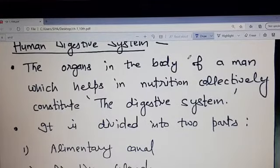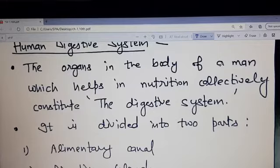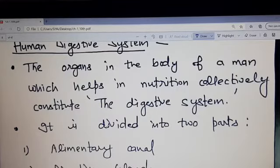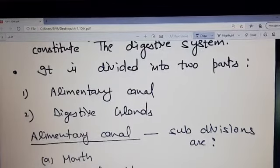The organs in the body of man which help in nutrition collectively constitute the digestive system. The digestive system is divided into two parts: alimentary canal and digestive glands.